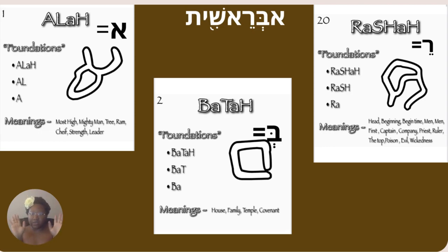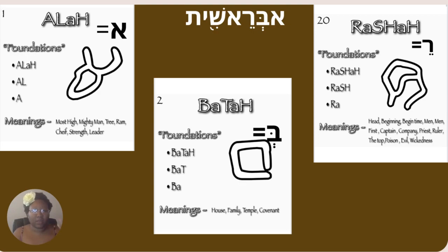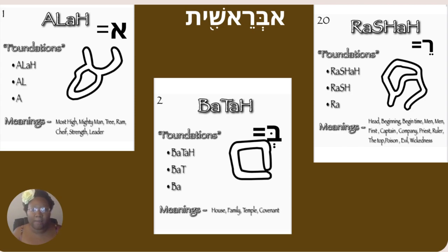So this is the first word in Genesis 1:1. We got 'Allah,' meaning the most high, mighty man, tree, ram, chief, strength and leader. 'Bata' — house, family, temple, covenant. And you see up here I have the modern Hebrew as well.